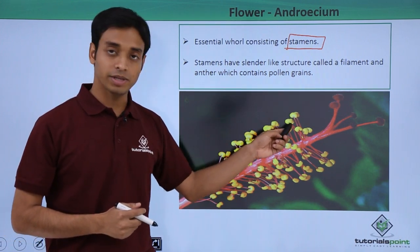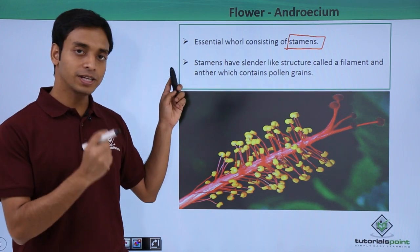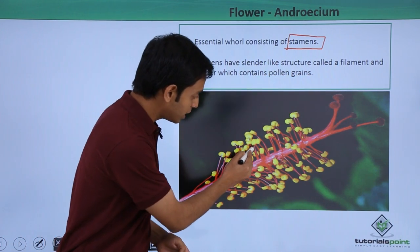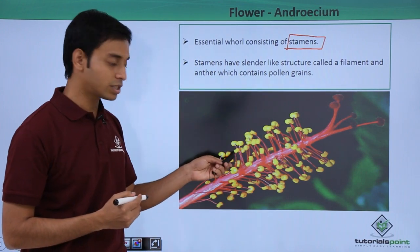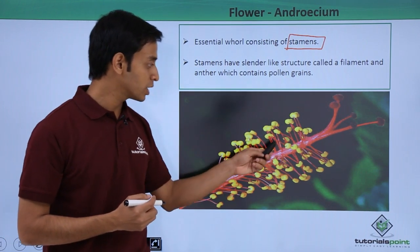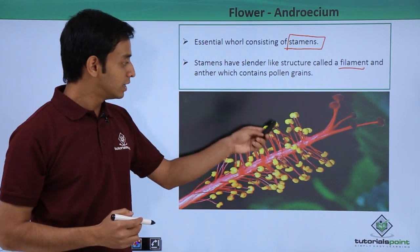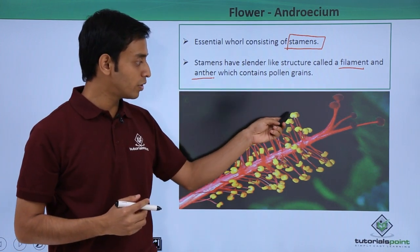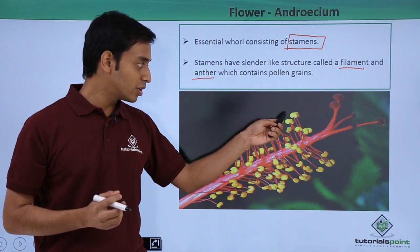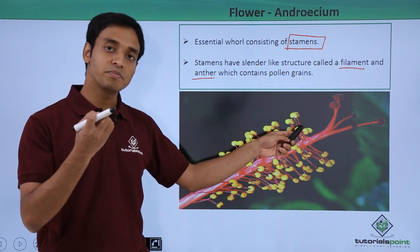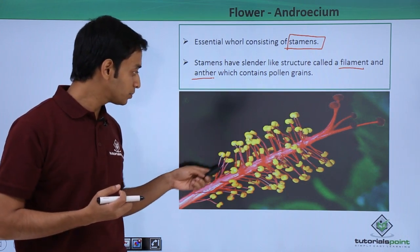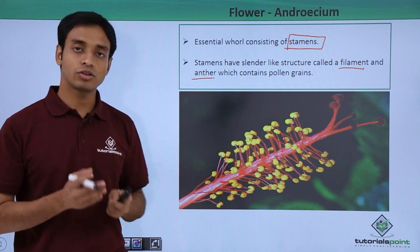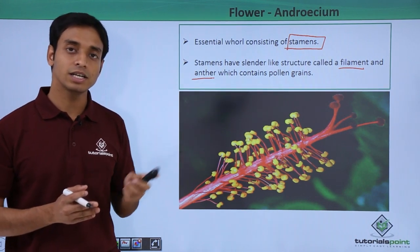Looking into this picture, we can see the stamens, which are the male reproductive part of a flower. A typical stamen has slender filament-type structures. These thin structures are attached to a central axis and are known as filaments. The filament attaches itself to the anther, which contains the pollen grains. The stamen consists of two main parts: the filament and the anther.